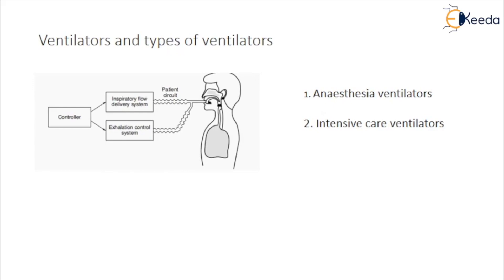Positive pressure ventilators generate respiratory flow by applying positive pressure — greater than atmospheric pressure — to the airways. During inspiration, the inspiratory flow delivery system creates positive pressure in the patient circuit while the exhalation control system closes the outlet to the atmosphere. There are two types of ventilators: anesthesia ventilators, which are generally small and simple equipment used to give regular assisted breathing during an operation; and intensive care ventilators, which are more complicated, give accurate control over a wider range of parameters, and often incorporate a patient triggering facility — delivering air to the patient when the patient tries to inhale.